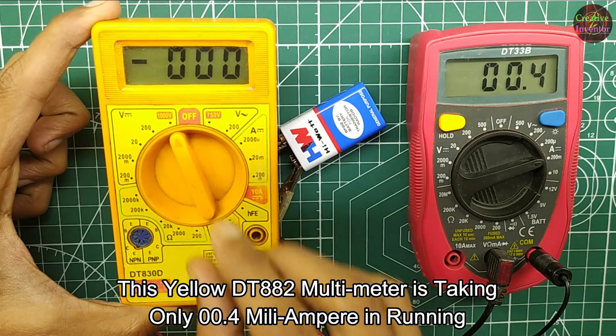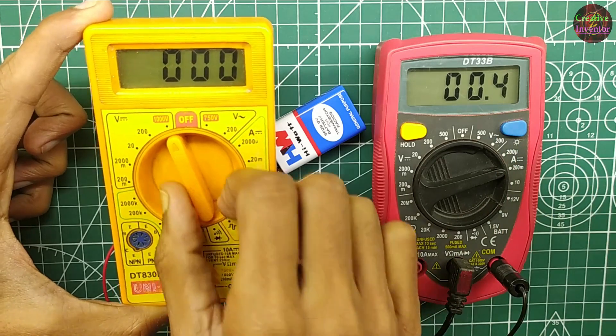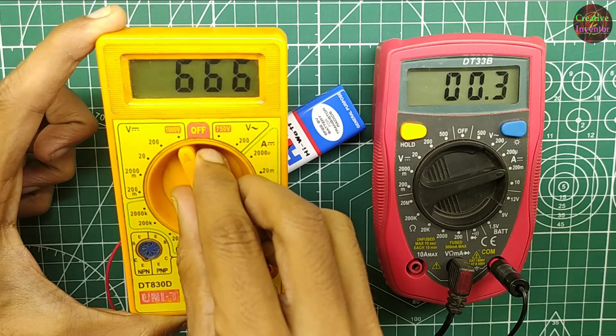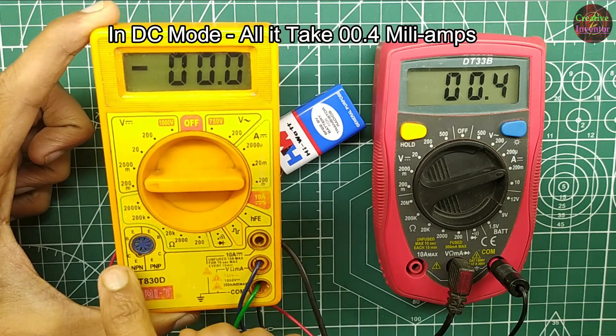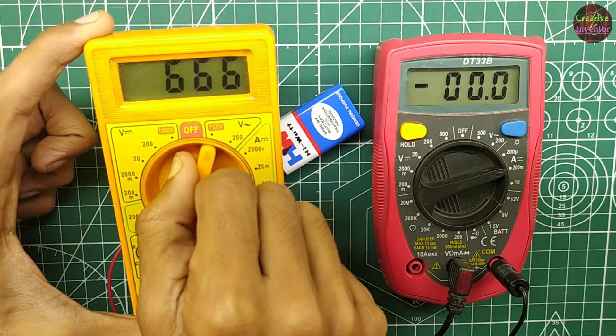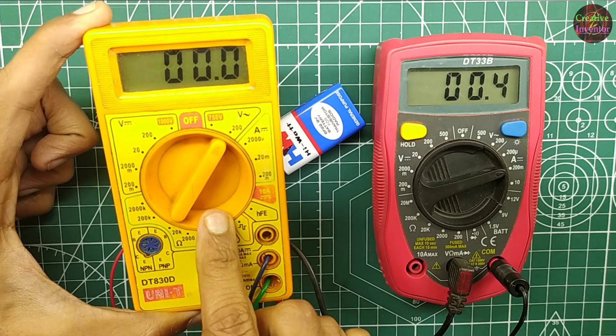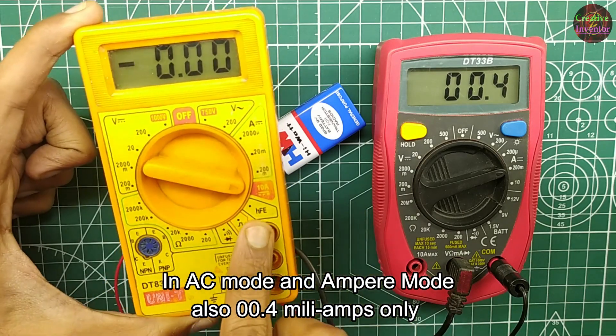This yellow DT882 multimeter is taking only 0.4 milliampere in running and no current in off mode. That's good. In DC mode it takes 0.4 milliamps. In AC mode and ampere mode also 0.4 milliamps only.